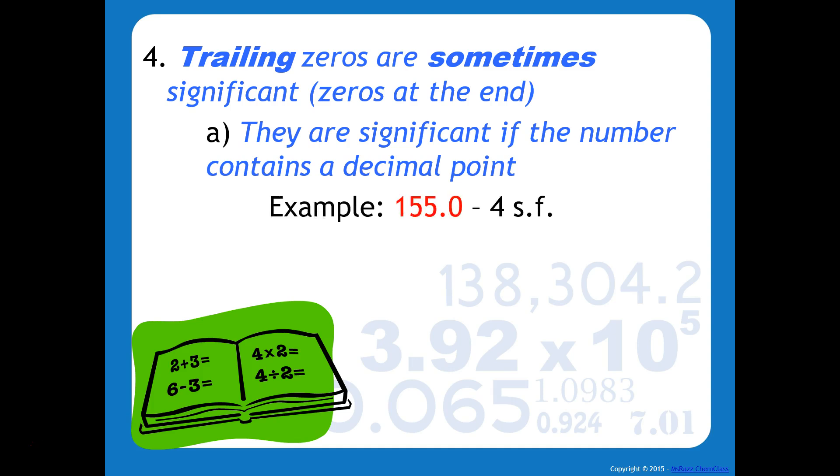So in the number 155.0, that zero at the end is considered significant because there is a decimal point. In the number 0.450, the zero at the end is also included in the number of significant figures.